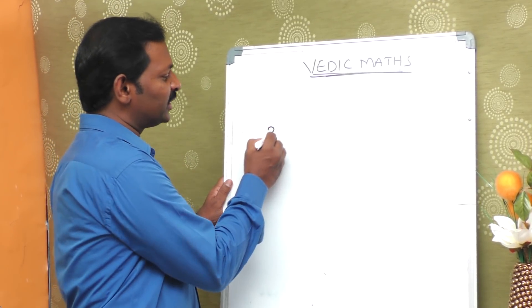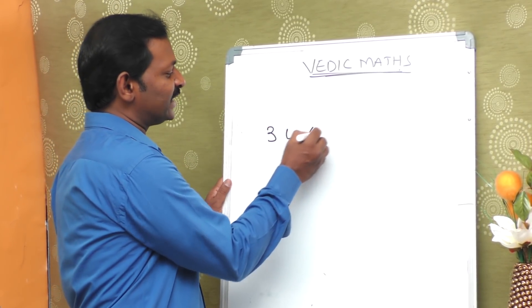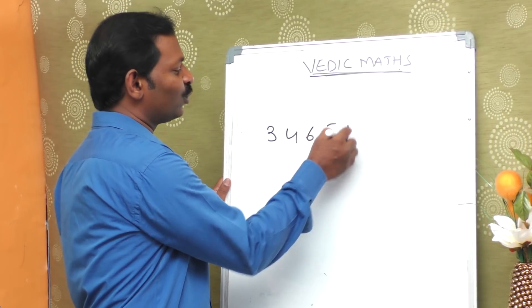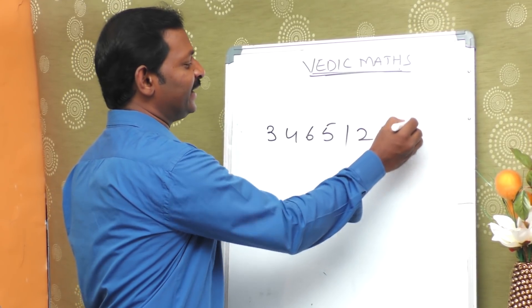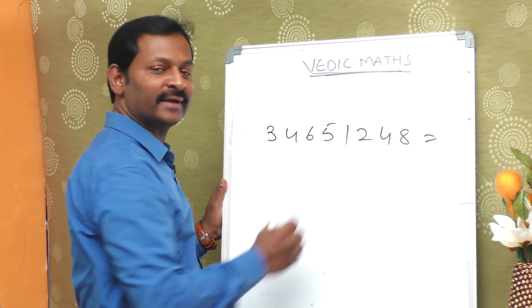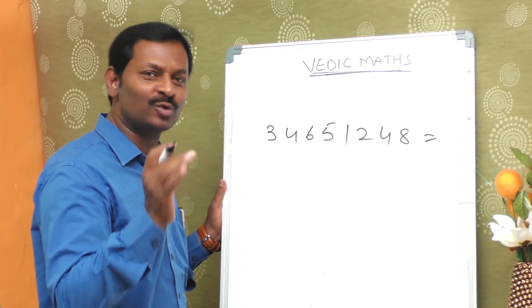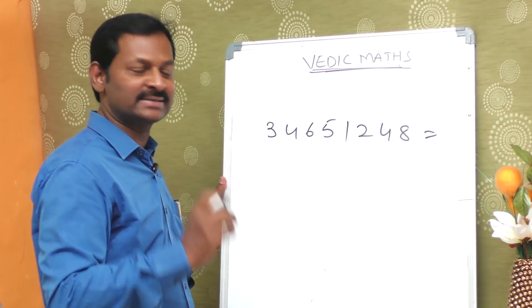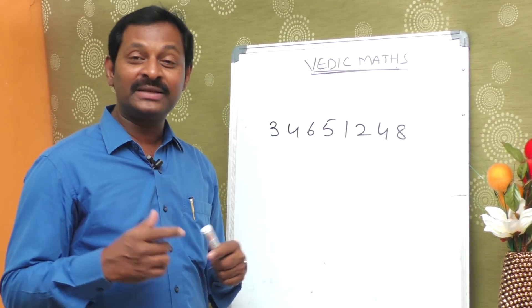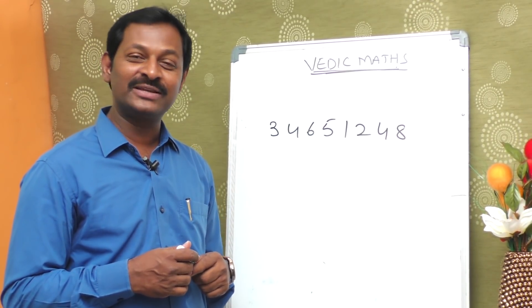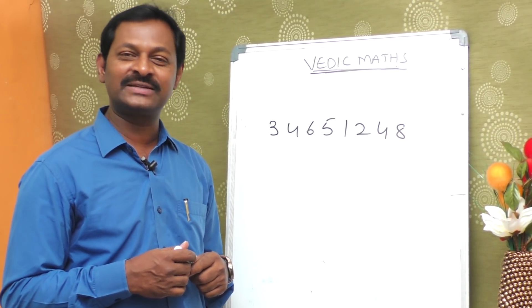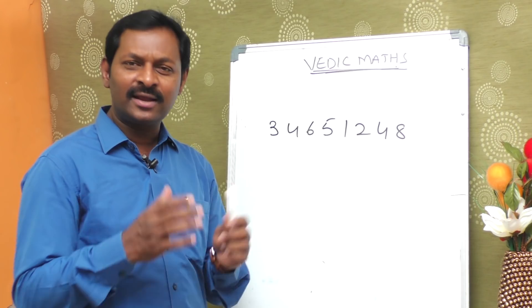Suppose you have the numbers 3, 4, 6, 5, 1, 2, 4, 8 — and their sum is equal to n. That's the same thing: 1 plus 1 is 2, 2 plus 2 is 4, 4 plus 4 is 8.